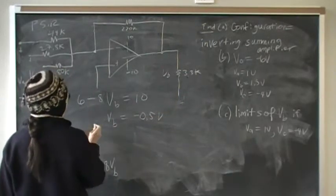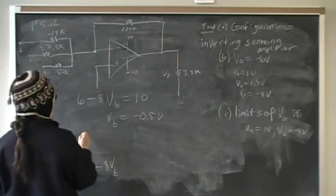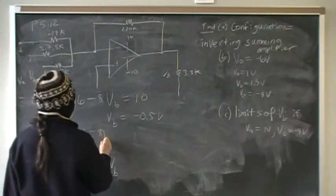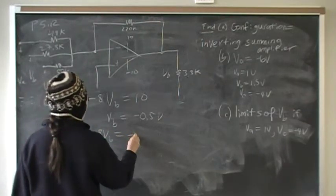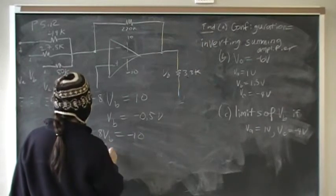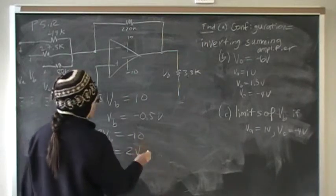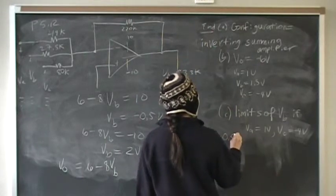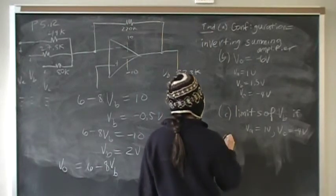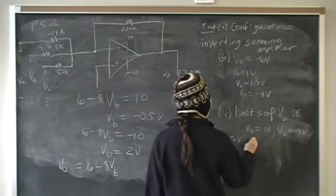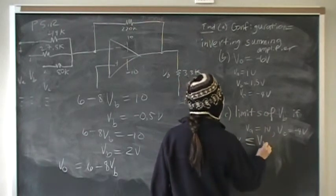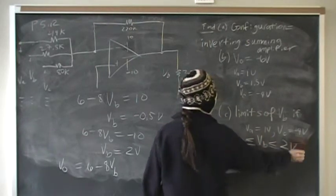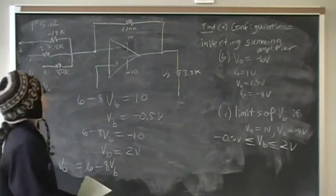Then the other point of saturation is 6 - 8Vb = -10, and Vb = 2 volts. So our limits for Vb are -0.5 volts and 2 volts. That's the answer to problem 12.